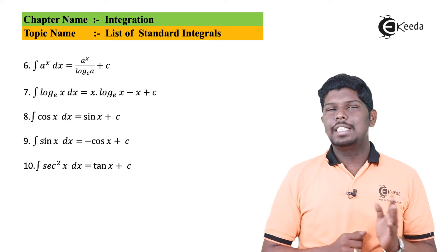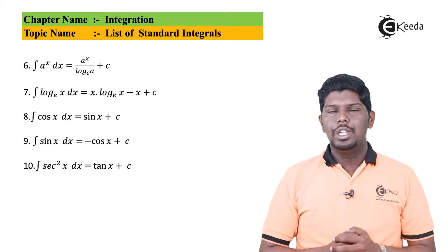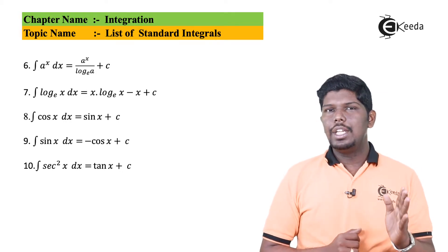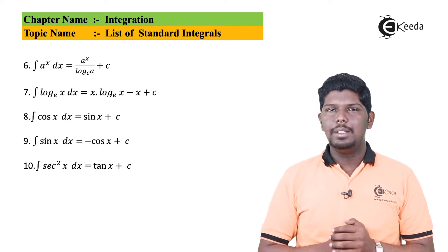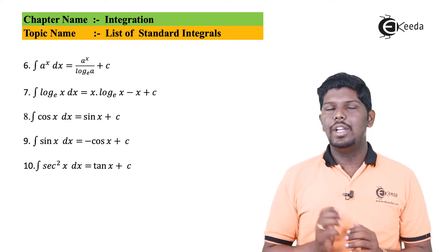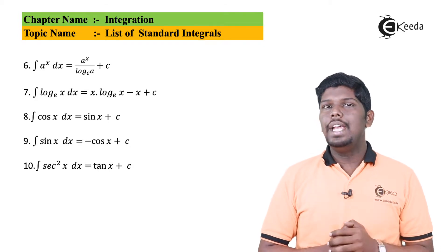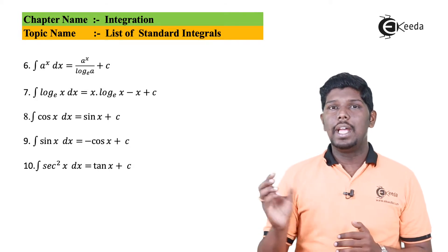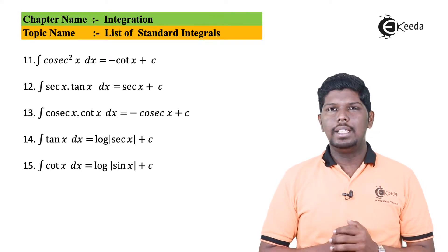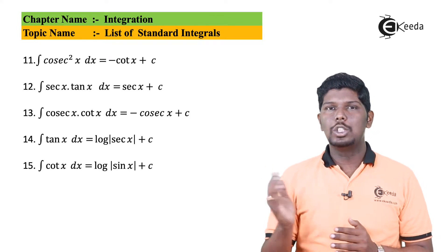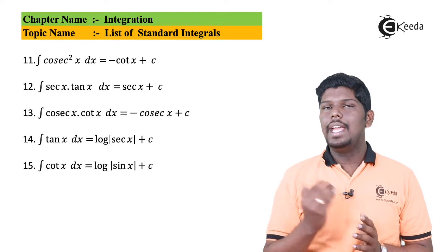The next six formulas are similar to the derivatives chapter — just take the anti-derivative. Integration of cos x gives sin x plus c, but integration of sin x gives minus cos x plus c. Integral of sec squared x gives tan x plus c, but integration of cosec squared x gives minus cot x plus c.